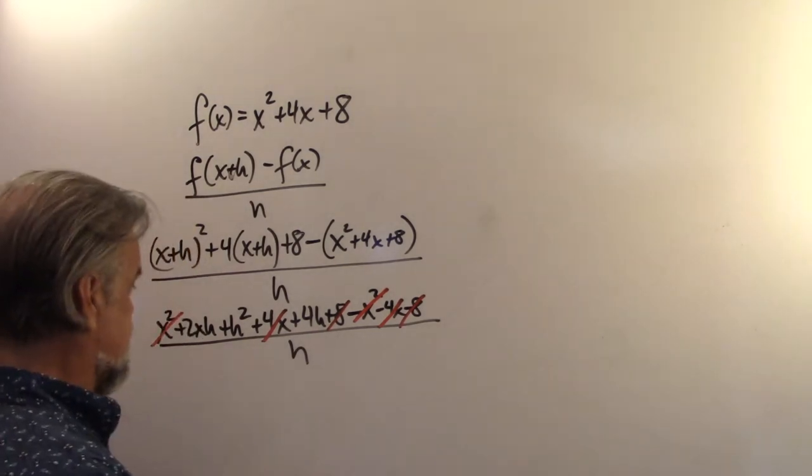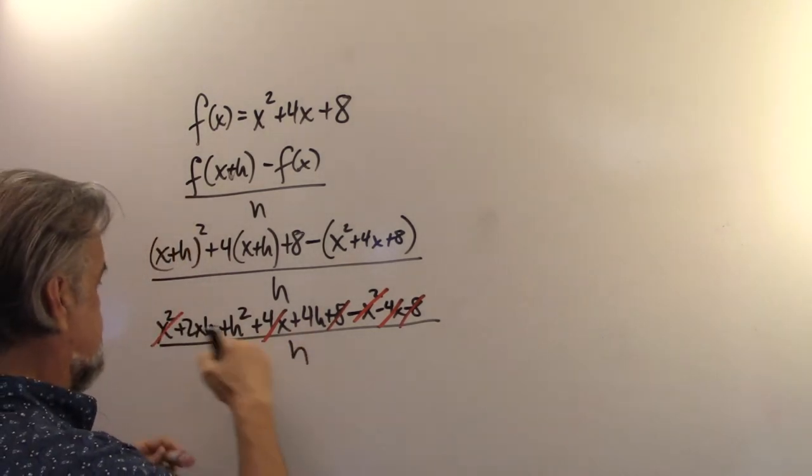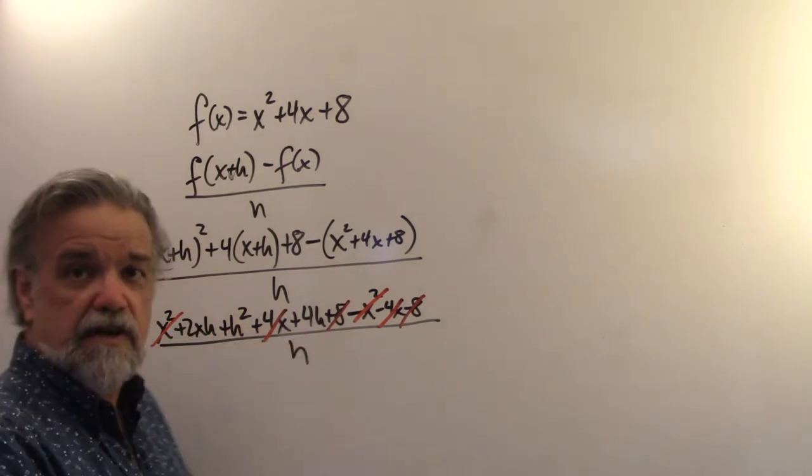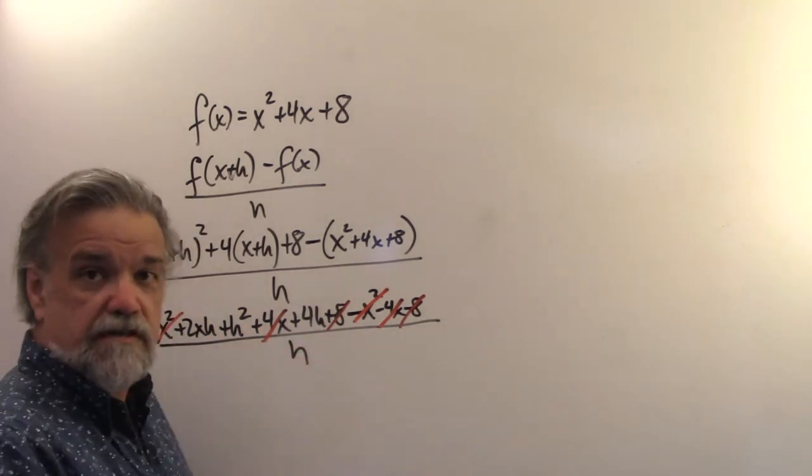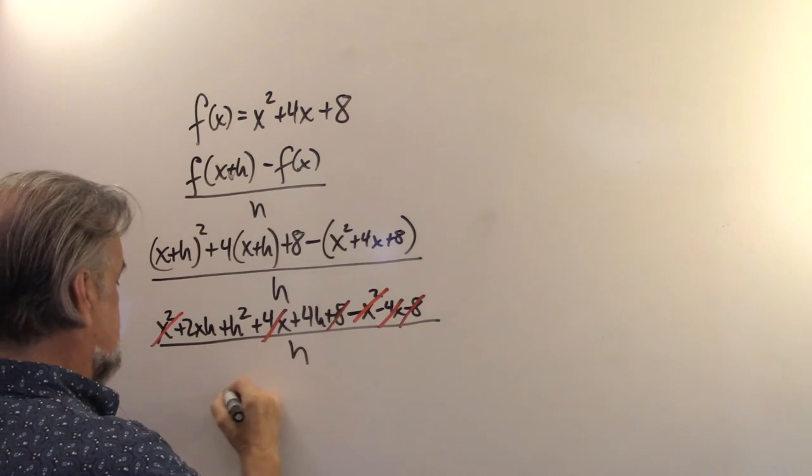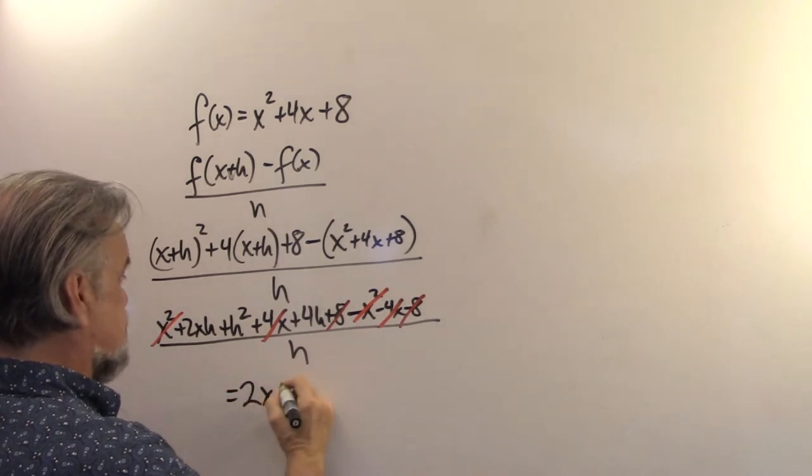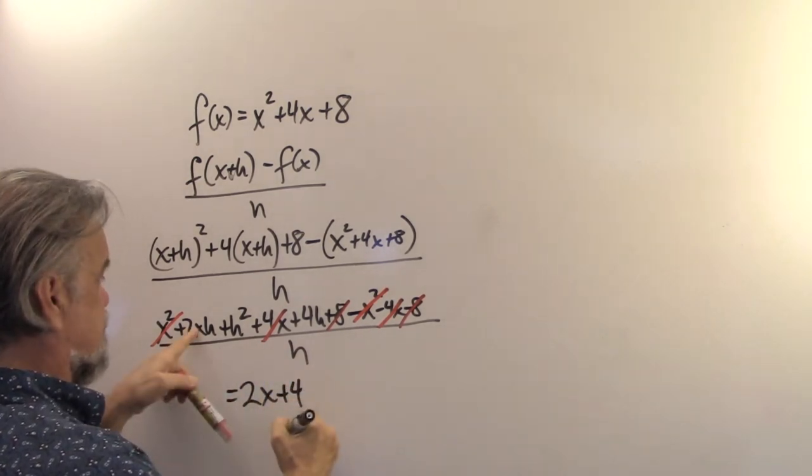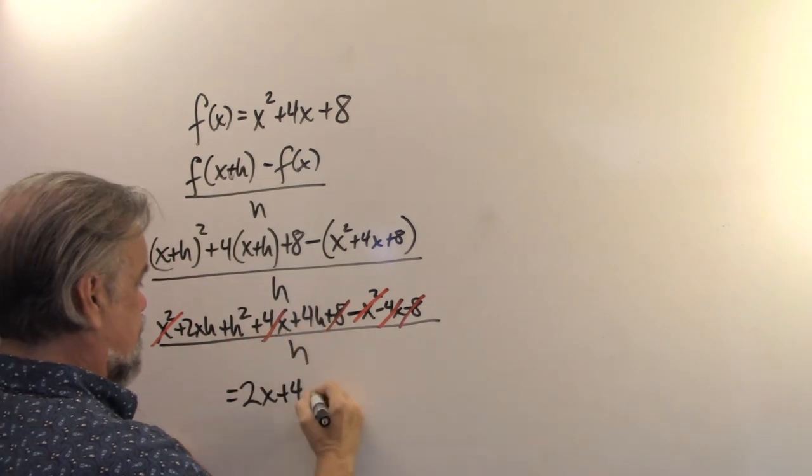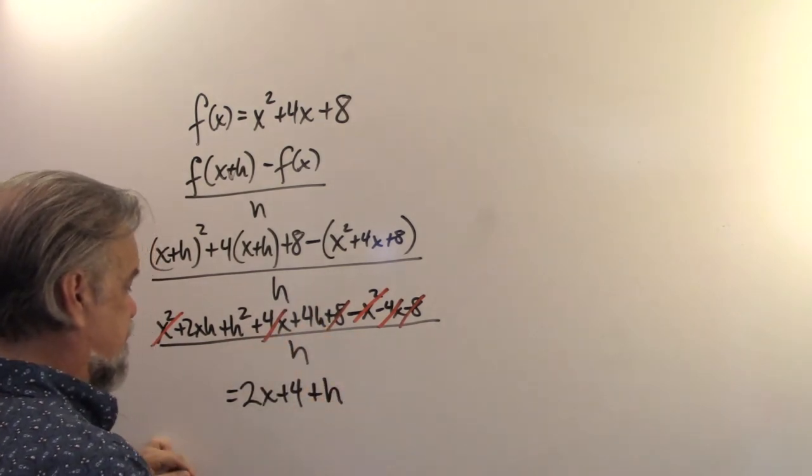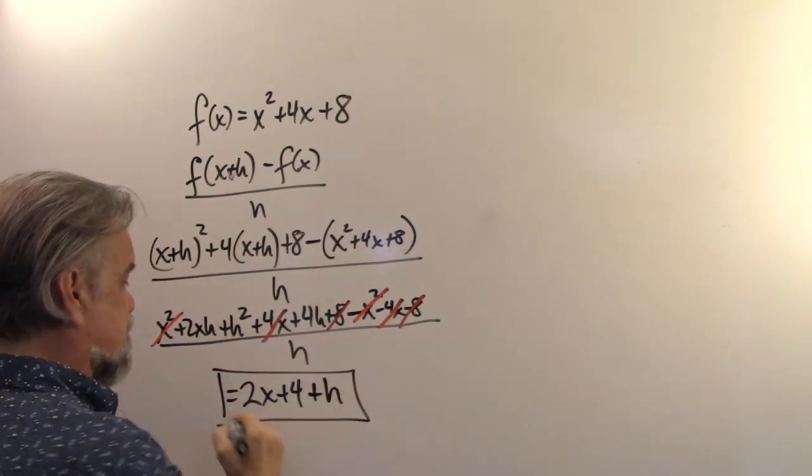So, I'm left with 2xh plus h squared plus 4h over h. And the h actually, I can, since these are all multiples of h, I can just cancel that out. So, this is going to be equal to 2x plus h plus 4. That is my difference quotient.